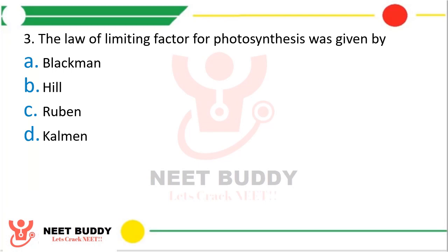Question 3. The law of limiting factors of photosynthesis was given by — option A: Blackman, option B: Hill, option C: Rubin, or option D: Kalman? The correct answer is option A, Blackman.